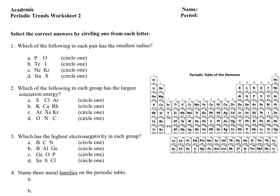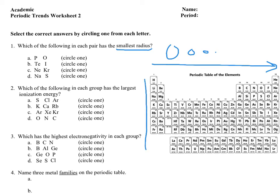The first question asks which of the following in each pair has the smallest radius. The atomic radius gets smaller when you go left to right on the periodic table, because as you go across you add more protons but it's the same energy level, so you just pull those electrons in closer. Atomic size also gets smaller as you go up the periodic table, because you're losing energy levels.